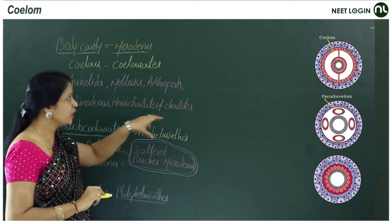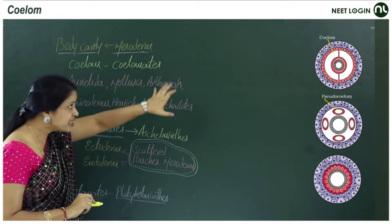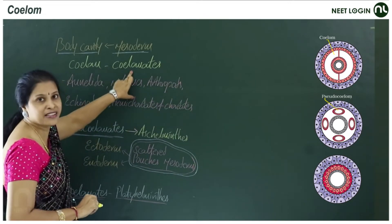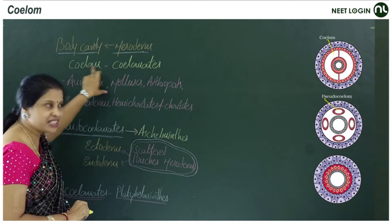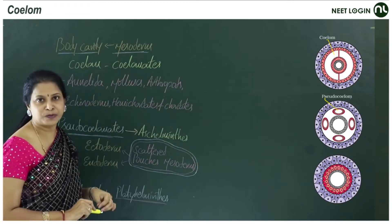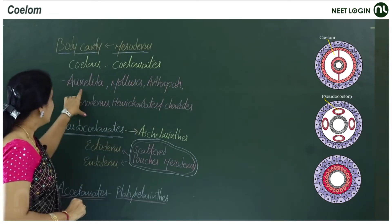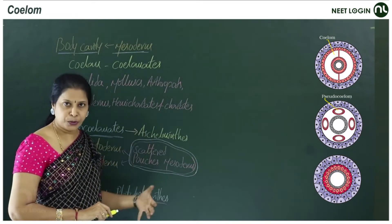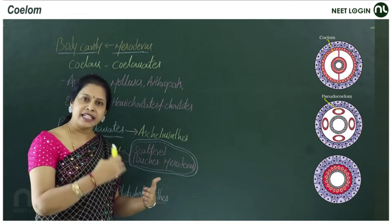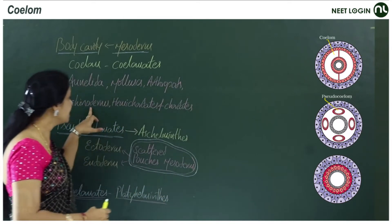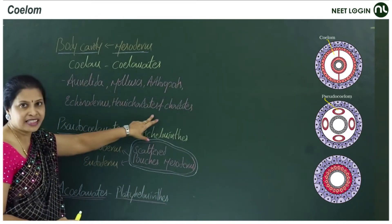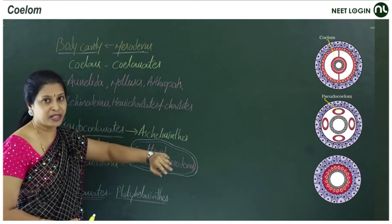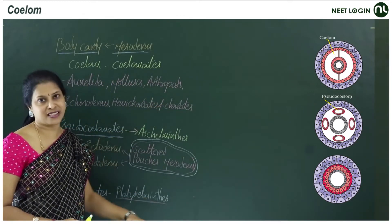Animals in which the cavity is lined by mesoderm are called coelomates, and that cavity is called a coelom. The phyla Annelida, Arthropoda, Mollusca, Echinodermata, Hemichordata, and Chordata all come under the coelomates. These are the true coelomates.